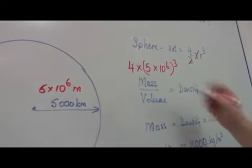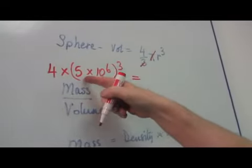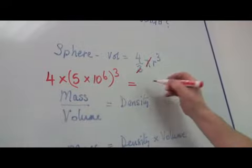Now, well, that's not too difficult to work out. 5 times 5 times 5 is 125.